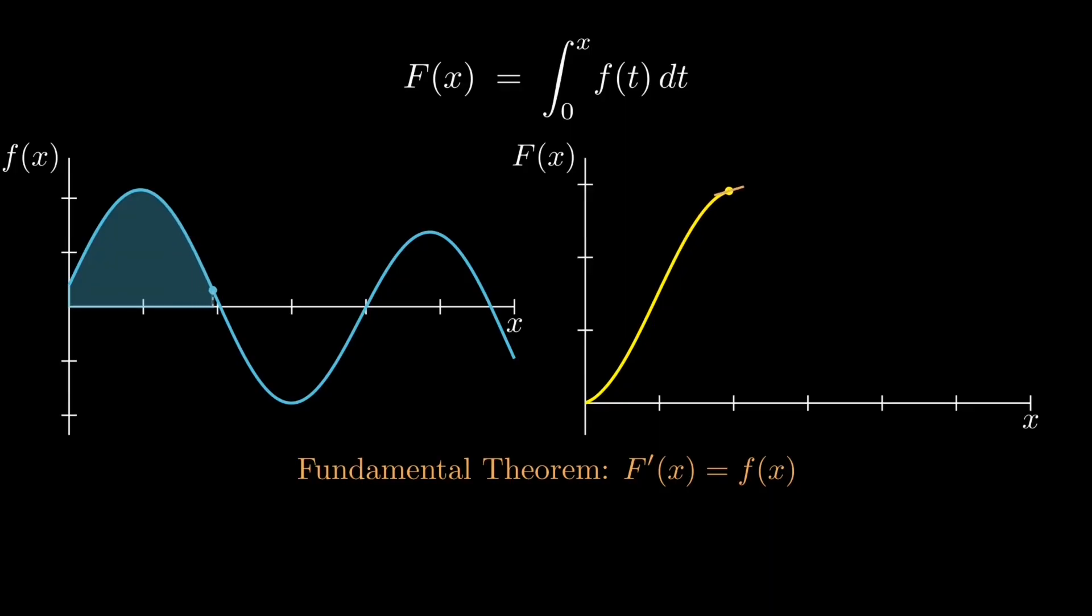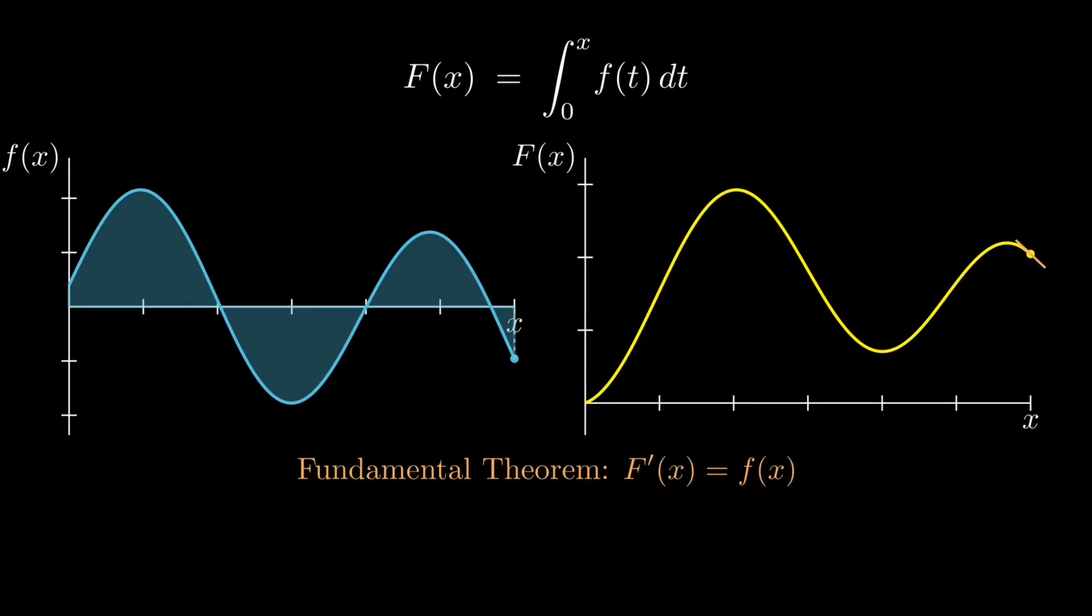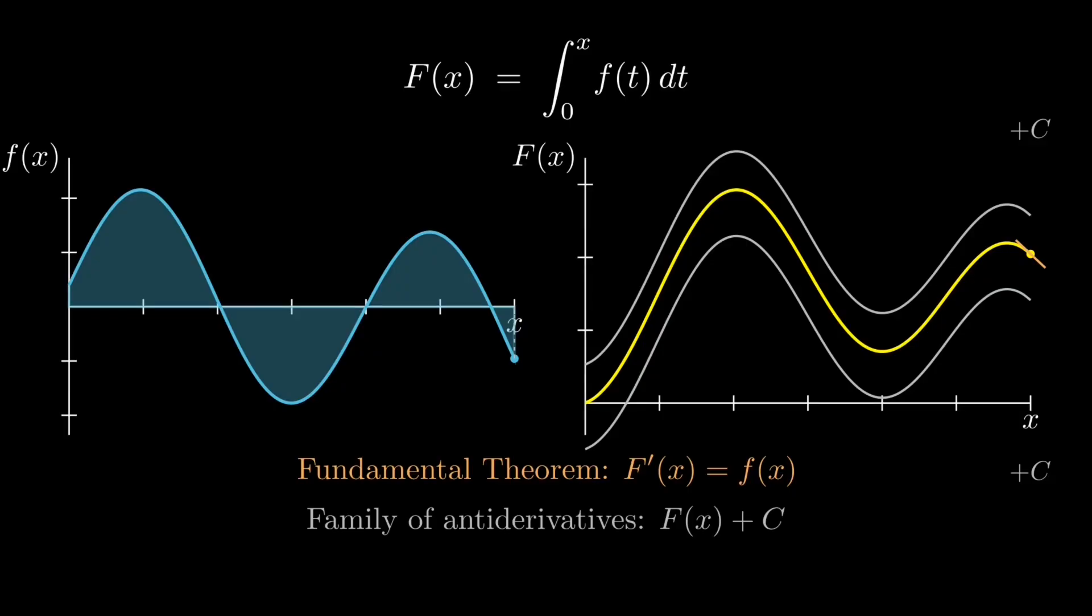The flip side says that to get a definite area, we just take an anti-derivative and subtract its values at the bounds. The plus c appears because shifting an anti-derivative up or down doesn't change the slope. In physics, that constant is fixed by an initial condition or reference level. And with this link between area and slope being clear, we can now move on to more general integration tools like substitution.